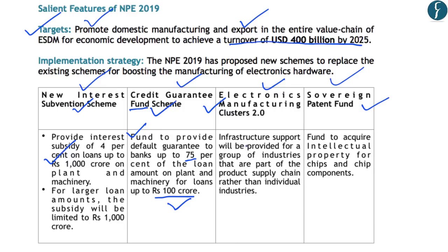Electronics Manufacturing Clusters will be created, providing infrastructure support to groups of industries in the product supply chain. Previously, under the earlier policy, infrastructure support was provided only to individual industries; now it will be provided at the cluster level, including all industries in the supply chain. Finally, since small and medium enterprises find it difficult to obtain intellectual property rights, a Sovereign Patent Fund has been created to assist MSMEs in acquiring intellectual property for their products. These are the salient features of the National Policy on Electronics 2019.